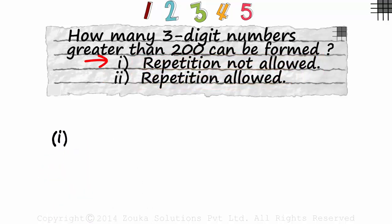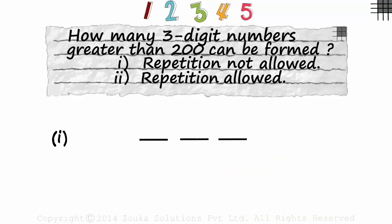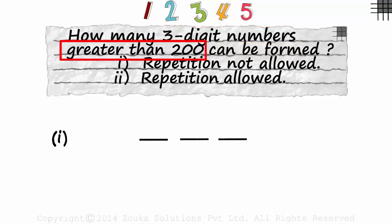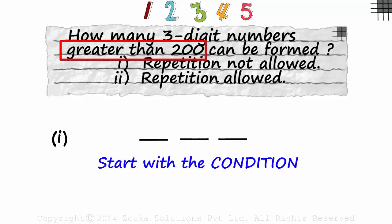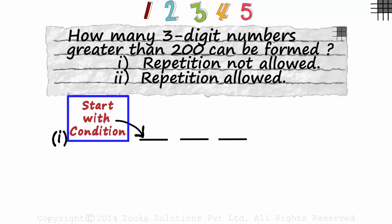Let's understand the first case. We have to form three-digit numbers, so we make three slots for each of the digits. Do we have a condition here? Yes, the condition is that the three-digit number must be greater than 200. We have seen before that if we have a condition, we always start with it — meaning we start with the hundreds place. This is a golden rule: if you are given a condition, always start with it.